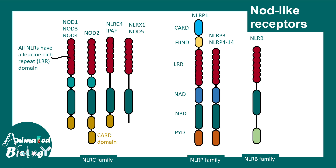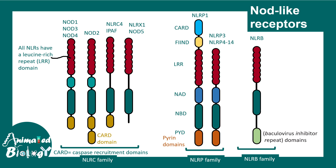Each subcategory is defined by one important signature domain. For example, the NLRC family is defined by the CARD domain, or caspase recruitment domain. Whereas the NLRP family has the pyrin domain as its signature. And NLRB has the baculovirus inhibitor repeat domain.